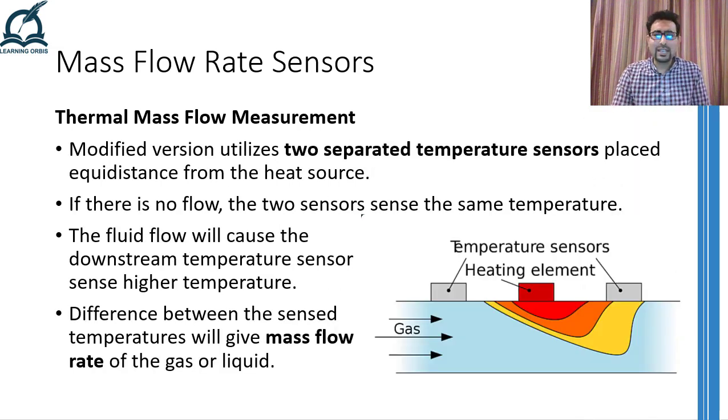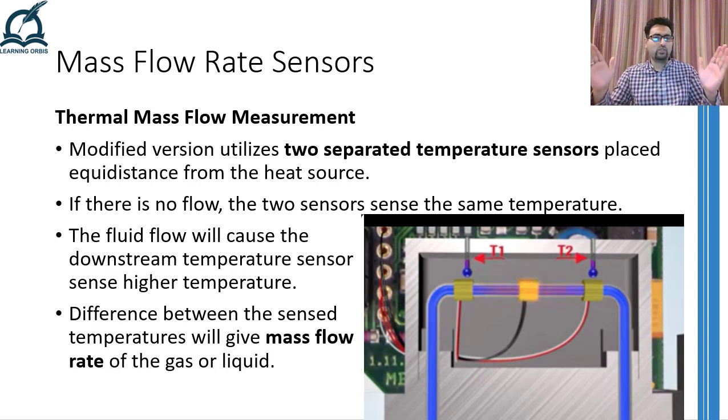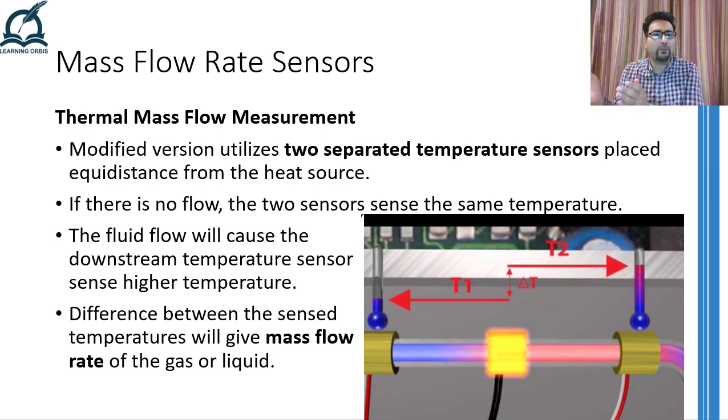In a modified version of this sensor, which is specially designed for liquids, two separate temperature sensors are placed equidistant from the heater. One upstream and the other one downstream as shown over here. If there is no flow in the pipe, then the heat from the heater will disperse equally on all sides. Hence both temperature sensors are going to read the same temperature. However, if there is some flow in the pipe, then the fluid particles will take the heat from the heater towards the sensor which is installed downstream. Hence the downstream sensor will sense higher temperature, whereas the upstream sensor will sense a lower temperature. This temperature difference between the two sensors will now be directly proportional to the mass flow rate.